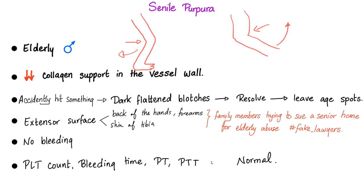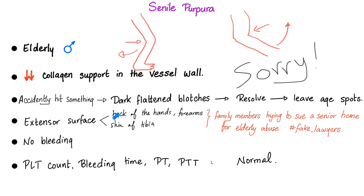Here is a great exam question: family members are trying to sue a senior home for elderly abuse because grandpa had dark spots on his skin. Do they have a case if the lesions are dark flattened blotches on the extensor surface? No, they do not have a case. But what if it was broken bones, lesions and bruises on the buttocks, multiple rib fractures, brain hemorrhage? Yes, they do have a case. Everything is about context — it freaking depends, the proof is in the pudding.